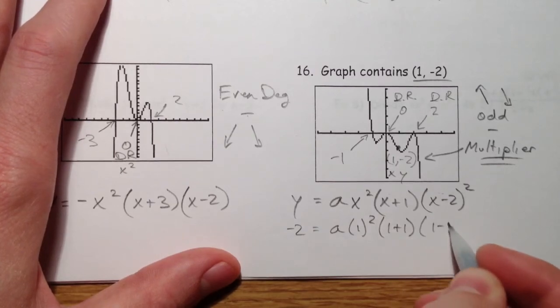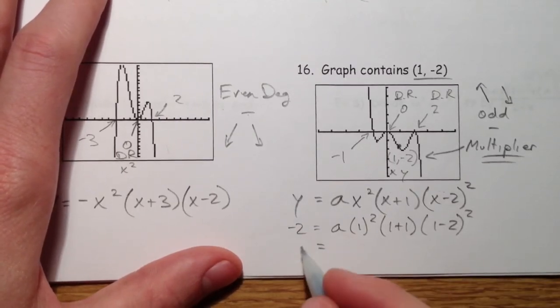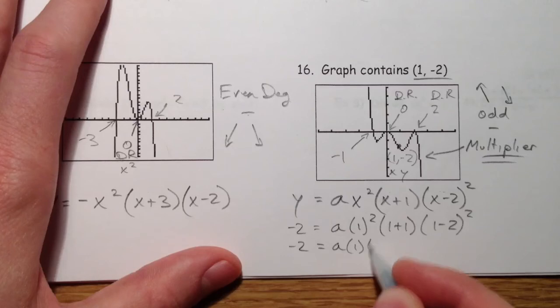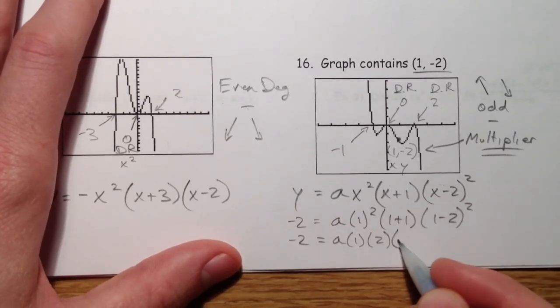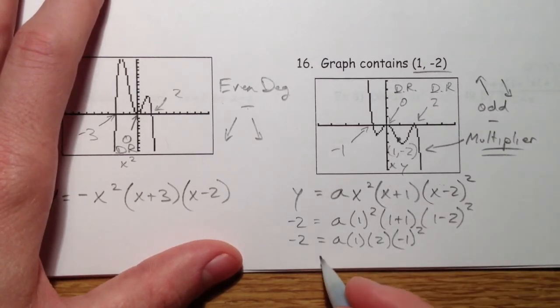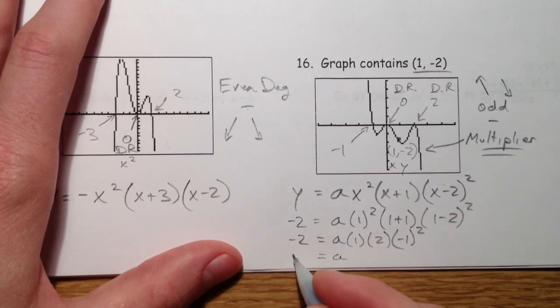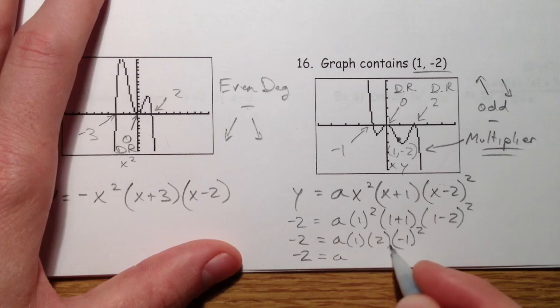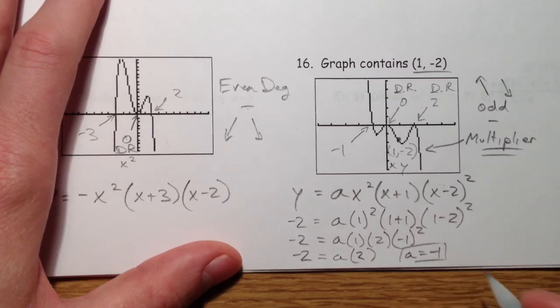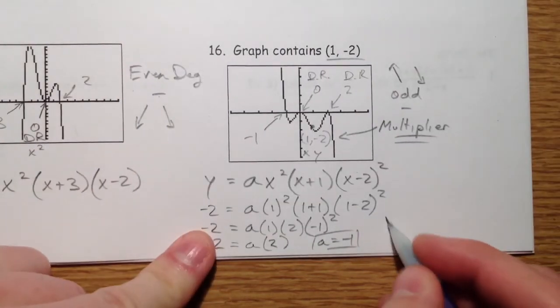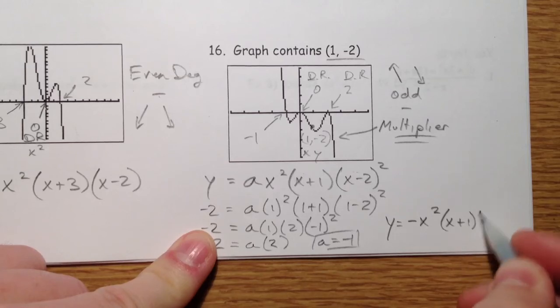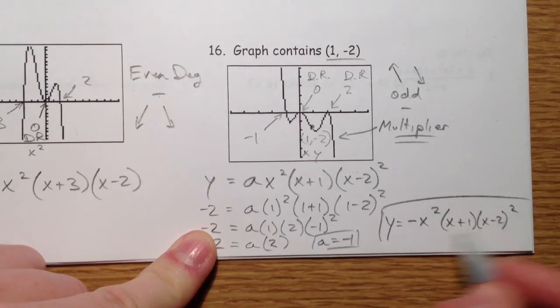So negative 2 equals a times 1 squared, 1 plus 1, 1 minus 2 squared. So 1 squared is 1 times 2 times 1 minus 2 is negative 1 squared. So that's really 1. That's negative 2 and positive 2. So a equals negative 1. So rather anticlimactic that it just made it negative. But you can write y equals negative 1 x squared, x plus 1, x minus 2 squared. And that's our function.